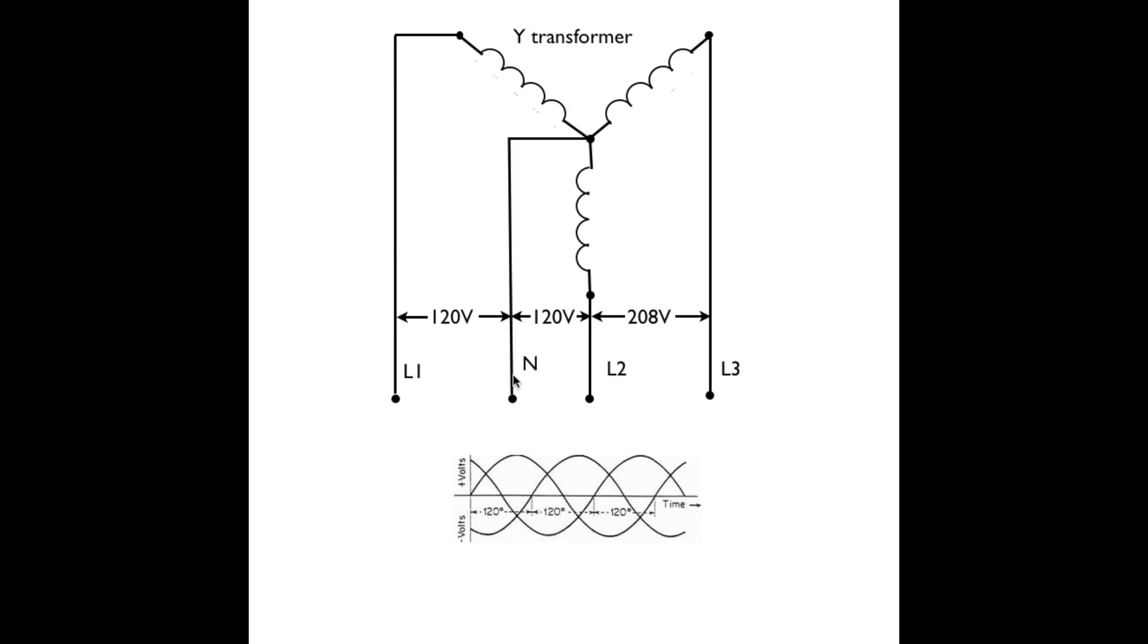The only way you'll get potential out of neutral is if you connect it to one of the lines. Like right here, I have 120 volts between L1 and neutral. And I've got 120 volts between L2 and neutral. And if I took the third phase and went to neutral, I would again get 120 volts.